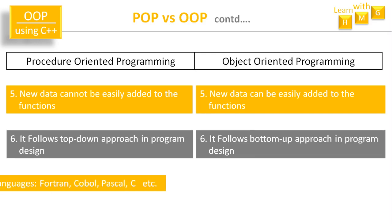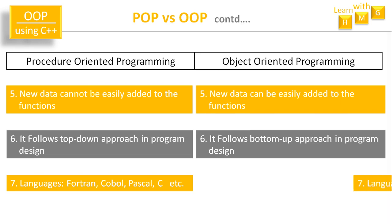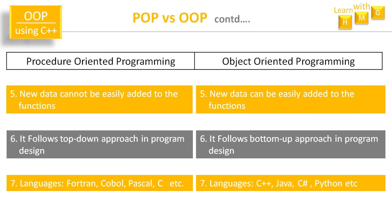There are various Procedure-Oriented Programming languages such as FORTRAN, COBOL, PASCAL, and C. While C++, Java, C#, and Python are Object-Oriented Programming languages.